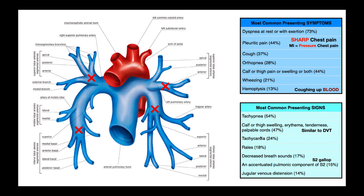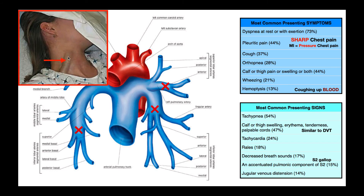Tachycardia — an elevated heart rate — is also a sign, though not as common. The next three signs can be detected via auscultation: rales, decreased breath sounds, and an S2 gallop, which is an accentuated pulmonic component of the S2 heart sound. The final sign is jugular vein distension. If you have blockages in the pulmonary arteries, there's a backup of blood limiting flow back to the right atrium. The veins draining from the head ultimately drain into the right atrium, so that backup causes the jugular vein in the neck to become distended.